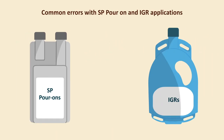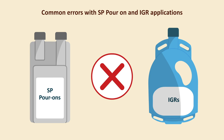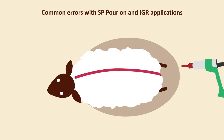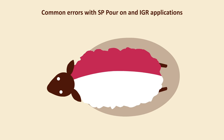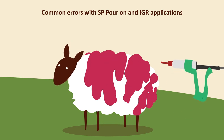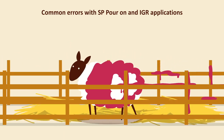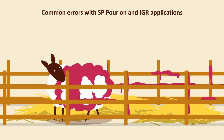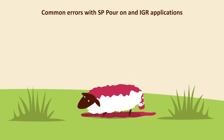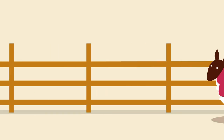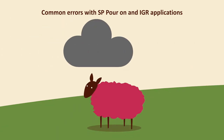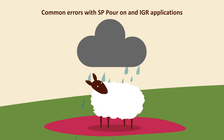There are several common errors when applying SP and IGR pouron products. These include: application to one side of the midline, resulting in protection on only one side of the sheep; failing to overlap the strokes for IGRs; not taking adequate care when handling animals after application; allowing lambs to lie down or roll in the grass immediately after treatment; failing to ensure the full dose lands on the animal; and exposing animals to very heavy rainfall after the product has been applied.